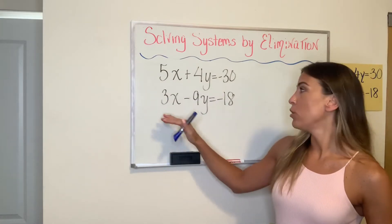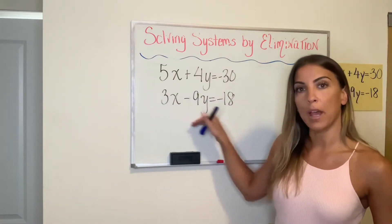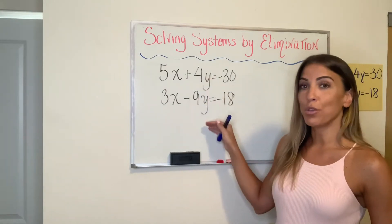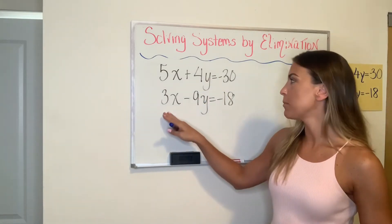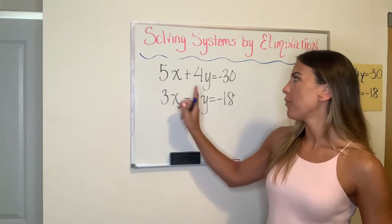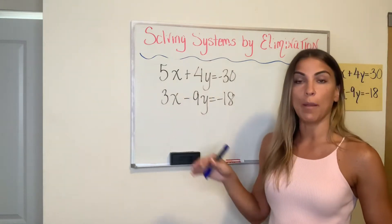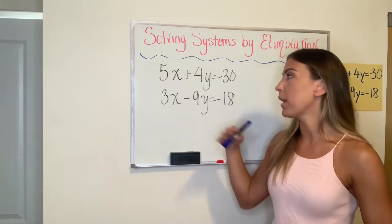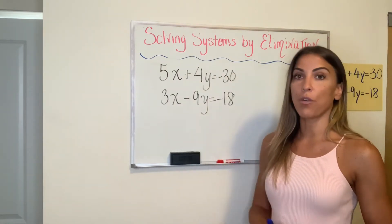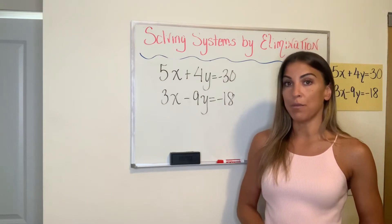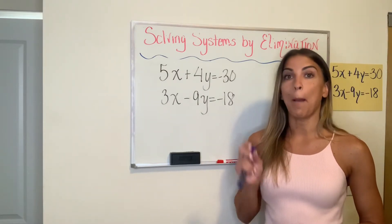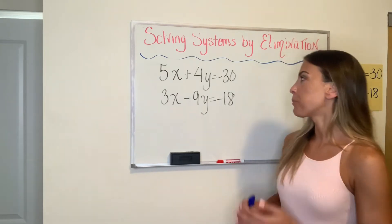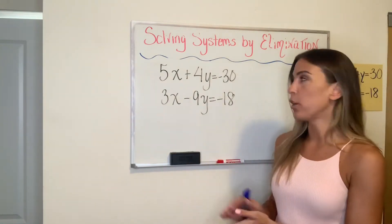But also when you look and you try to see what can I multiply one of the equations by to get the opposite coefficient the other one, you'll notice that there is no number, no integer that I can multiply by to get from three to five or nine to four or vice versa. So what happens in this scenario is we're going to have to look for, you're going to pick a variable first and we're going to have to look for what's the least common multiple of these variables and then we're going to multiply both equations by a number and it will not be the same number. So let's pick a variable first.